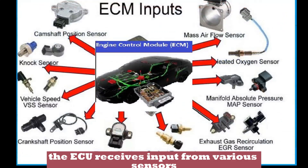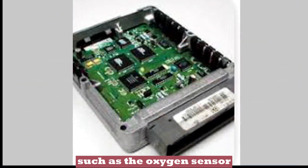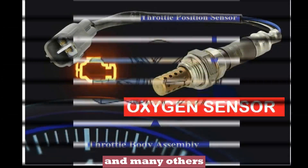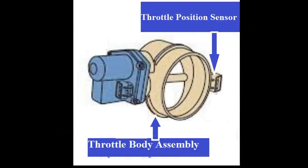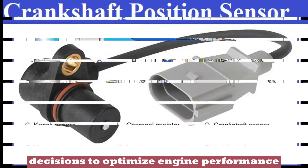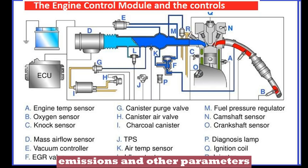The ECU receives input from various sensors located throughout the vehicle, such as the oxygen sensor, throttle position sensor, crankshaft position sensor, and many others. It processes this information and makes real-time decisions to optimize engine performance, fuel efficiency, emissions, and other parameters.